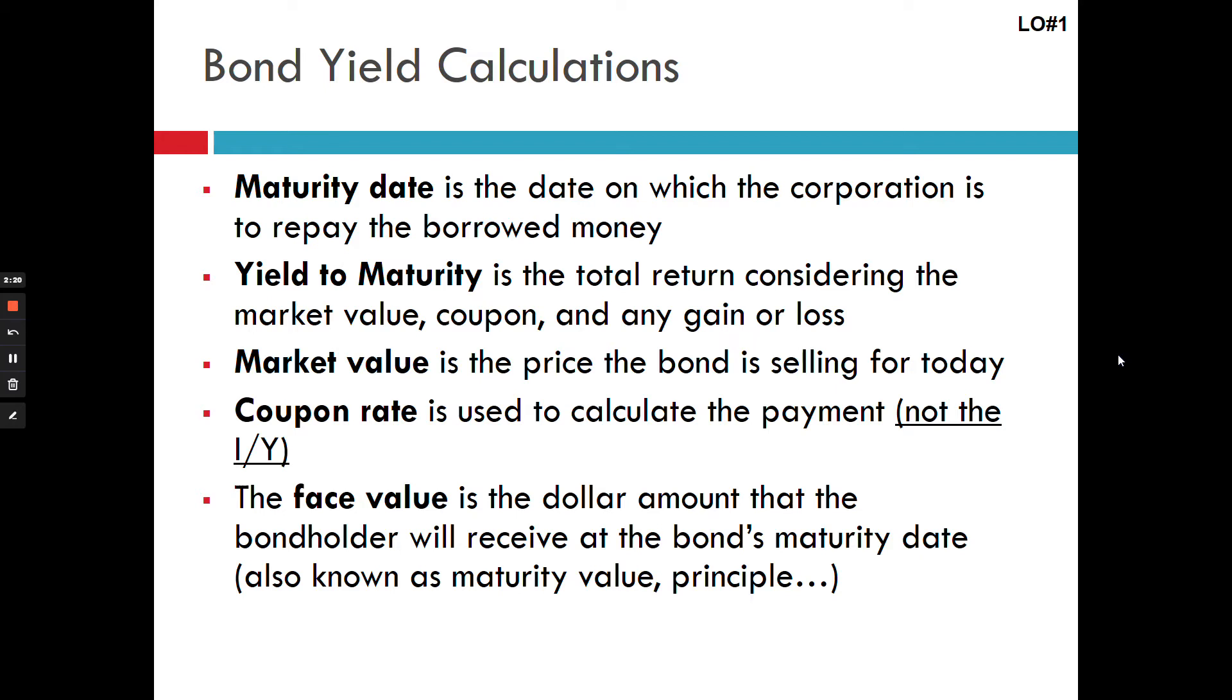The coupon rate, you use the formula of coupon percentage equals coupon dollars divided by face value. If you didn't catch that, not a problem, it's in the slides. But coupon percentage equals coupon dollars divided by face value. So you can rearrange the formula to solve for dollars if you are given the rate.